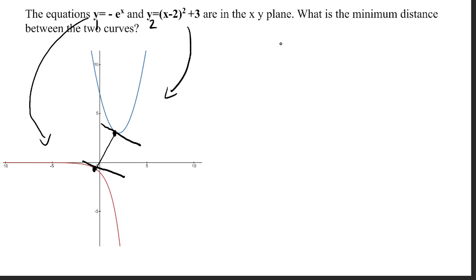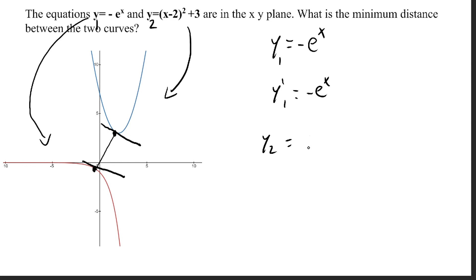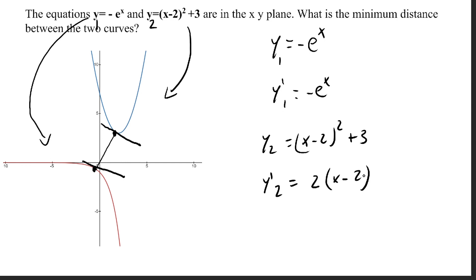The derivative of y1 equals negative e to the x is y1 prime equals negative e to the x — it's just the same thing. And the derivative of y2 equals x minus 2 squared plus 3 is 2 times x minus 2. We will now set the derivatives equal to find where the tangent lines are parallel.